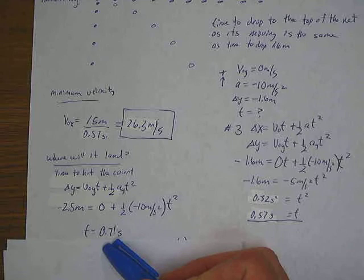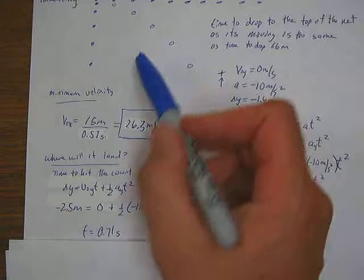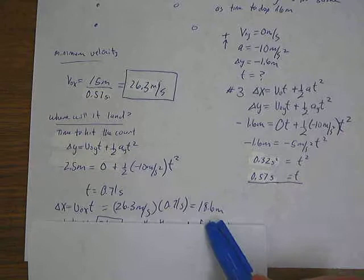So I set that up first and I get that it's about 0.7 seconds. When I plug in the new distance here, change of position of negative 2.5, everything else is the same as we did over here. I get 0.71 seconds.